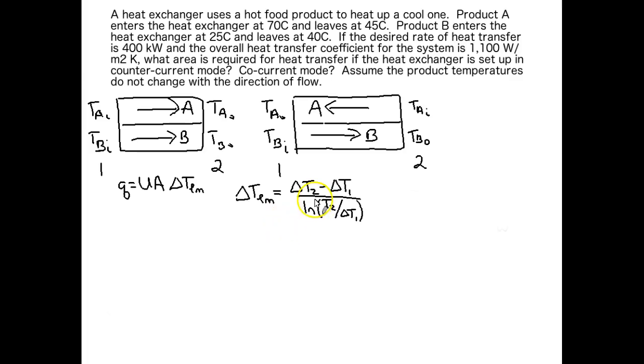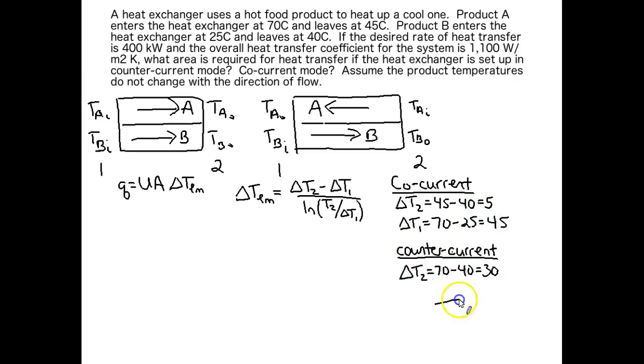All right, the next step is to calculate delta T2 and delta T1 for co-current versus counter current. So let's take those. Okay, so now we've got delta T2 and delta T1 for co-current and counter current.